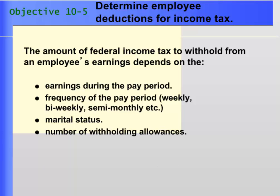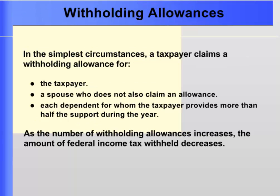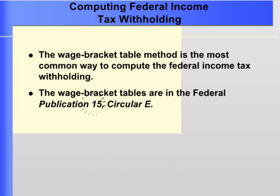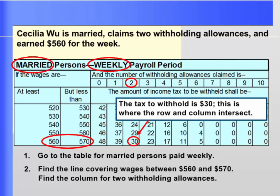A substantial portion of federal government revenue comes from income tax on individuals. Withholding depends on earnings, frequency of the pay period, marital status, and number of allowances. An allowance generally refers to the number of exemptions the person will claim on their income tax return, Form 1040. To claim withholding allowances, each employee completes an Employee's Withholding Allowance Certificate, Form W-4. The wage bracket table method is the most common way to compute federal income tax withholding — employers choose the proper table based on pay period and marital status. For Cecilia Wu, $30 is withheld for federal income tax.